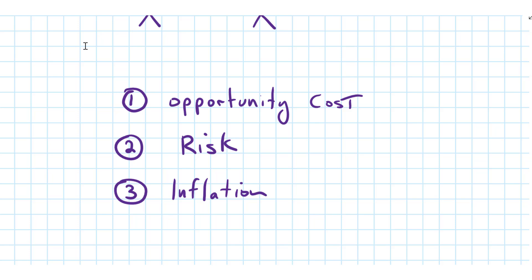That's the idea of risk. And the third idea is inflation — that's the increase in prices over time. So $100 in one year does not buy you as much as it does today. You'd rather have your $100 paid back sooner rather than later. Those are the three ideas behind the time value of money.